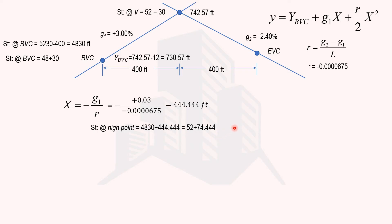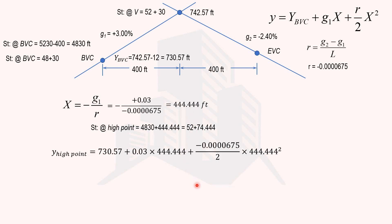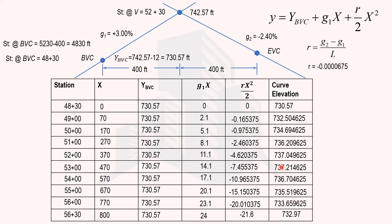To find the elevation of the high point, we substitute x = 444.44 feet into the curve elevation equation: elevation = y_BVC + g1·x + (r/2)·x². With all values known, the elevation at the high point computes to 737.2367 feet. Looking at the computation table, the elevation at full station 53+00 is 737.21 feet, confirming the true high point lies between stations 52 and 53, at 52+74.44, with elevation 737.2367 feet — slightly greater than the tabulated value.